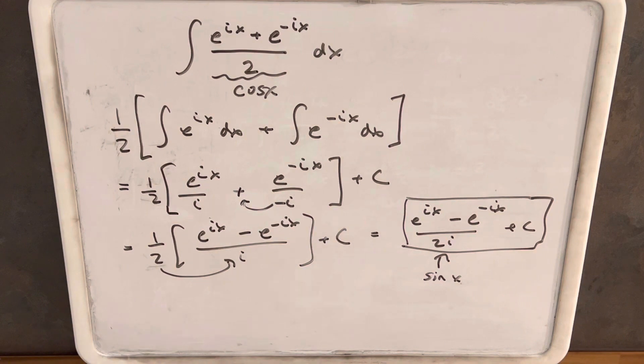And so all we did was we just integrated cosine, and we got back sine. And so the only real trick was that it was a little unfamiliar because using Euler's formula, we used that definition of sine and cosine to do the integration.